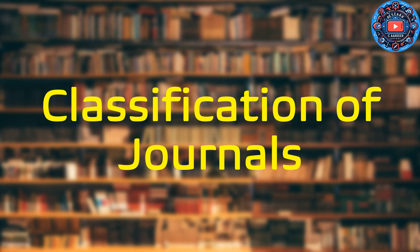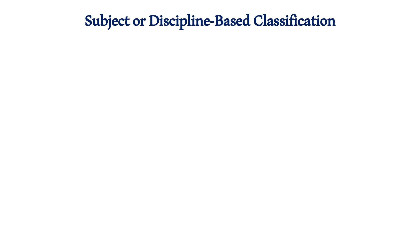Hello friends, welcome to my channel. Today we are going to talk about the classification of journals. Classification of journals means how different journals are going to be segregated into different categories. For that, different types of criteria can be applied — on the basis of publication processes, reviewing processes, open access or subscription charges, impact factor, scope, and subject area.